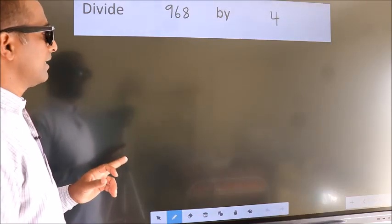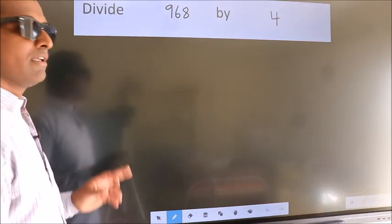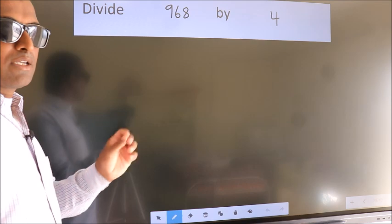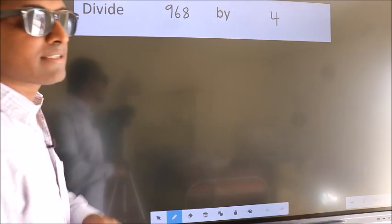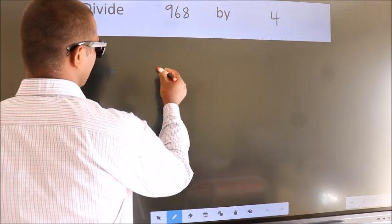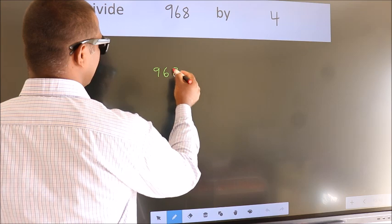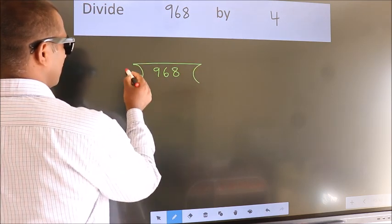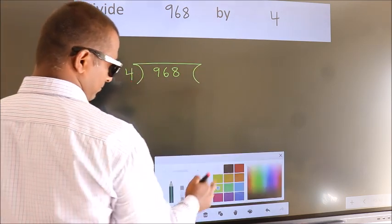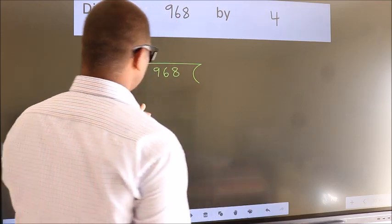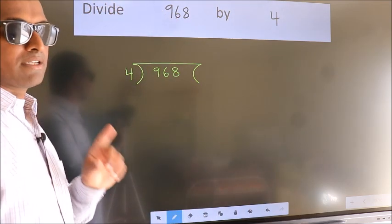Divide 968 by 4. To do this division, we should frame it in this way. 968 here, 4 here. This is your step 1.